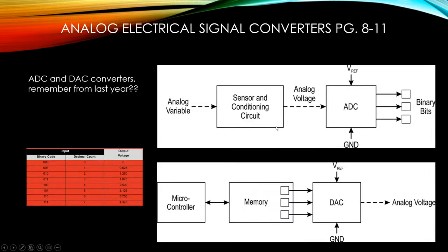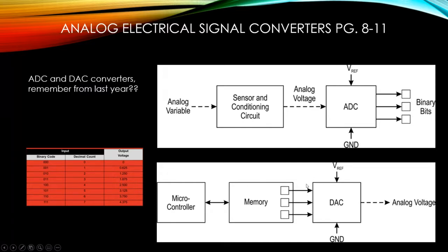Analog-to-digital signal conversion is where some of the earlier learning about resolution comes back. We take an analog signal from a transmitter and put it into a PLC, converting it from analog to digital so it can go into the processor. The processor does math, sends it out as a digital signal, which gets converted back to analog by a digital-to-analog converter, and that signal goes out to the valve.